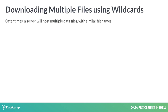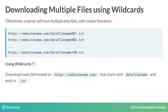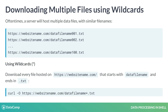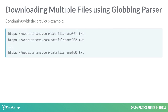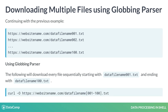Oftentimes, a server will host multiple data files with similar file names like this. Instead of curling each file individually, we can use wildcards to download all the files at once. To download every file hosted on the server that starts with data_file_name and ends in .txt, we use curl -O followed by https://website_name.com/data_file_name*.txt. Another option is to increment using a globbing parser. The following will download every file sequentially starting with data_file_name001.txt and ending with data_file_name100.txt, using the syntax [001-100].txt — that's the globbing at work.